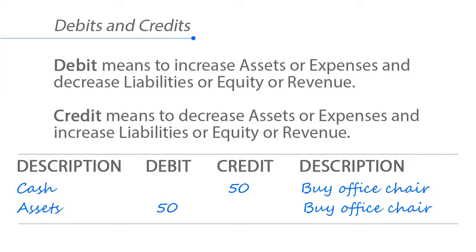You may not have to remember all of this perfectly, but if you are going to have a career in accounting, you probably will. Looking at the table, we have two entries: the cash entry shows a credit — a reduction of cash of $50 to buy the office chair — and then an increase in assets, which is a debit of $50 to purchase the office chair. So assets are debited, cash is credited.